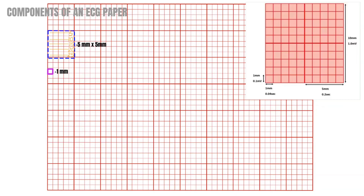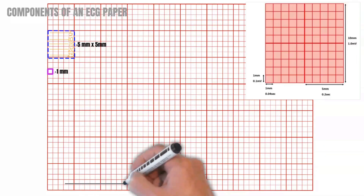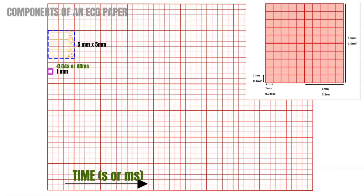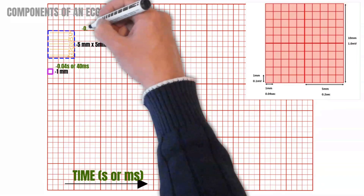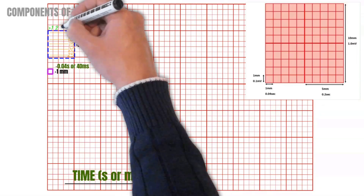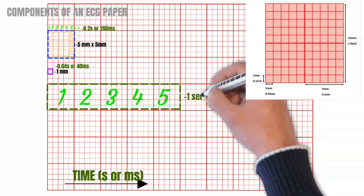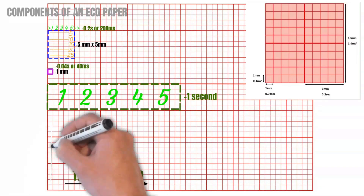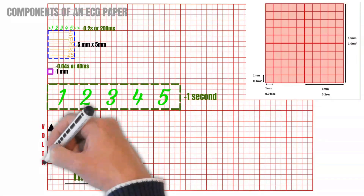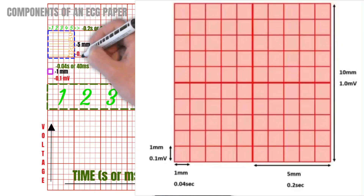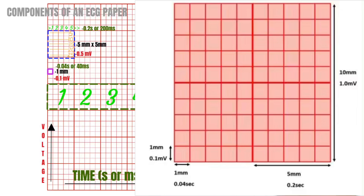The horizontal plane of the paper tells you the time in seconds or milliseconds. Each small box, which is one millimeter in size, equals 0.04 seconds or 40 milliseconds. One large box, which is 5 millimeters, is equal to 0.2 seconds or 200 milliseconds, composed of five small boxes. Therefore, five big boxes equal one second. The vertical plane of the paper tells you the voltage. Each small box is equivalent to 0.1 millivolt; therefore one big box equals 0.5 millivolt.